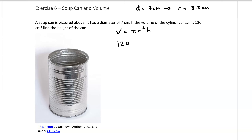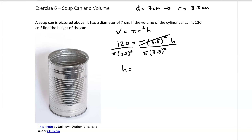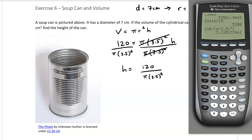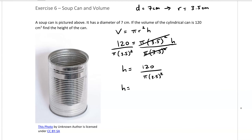We know the volume is 120 and the radius is 3.5. We want to square that radius and solve for h. Dividing both sides by pi times 3.5 squared, h equals 120 over pi times 3.5 squared. That is the height of the can.